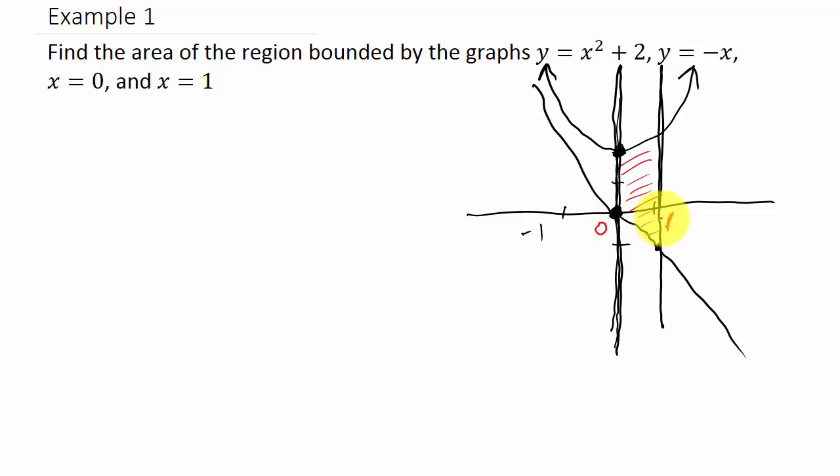Now to get the area, the area is going to equal - and I'm integrating from 0 to 1 - it's this curve minus this curve. So that's going to be x squared plus 2 minus this curve, so minus negative x. And I'm integrating that with respect to x.